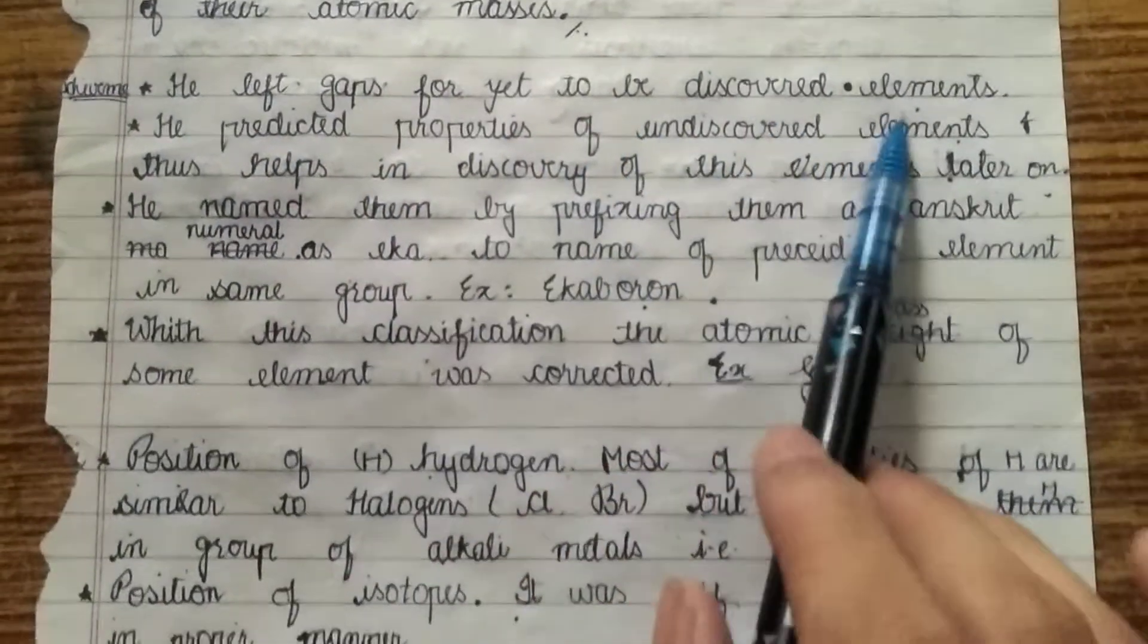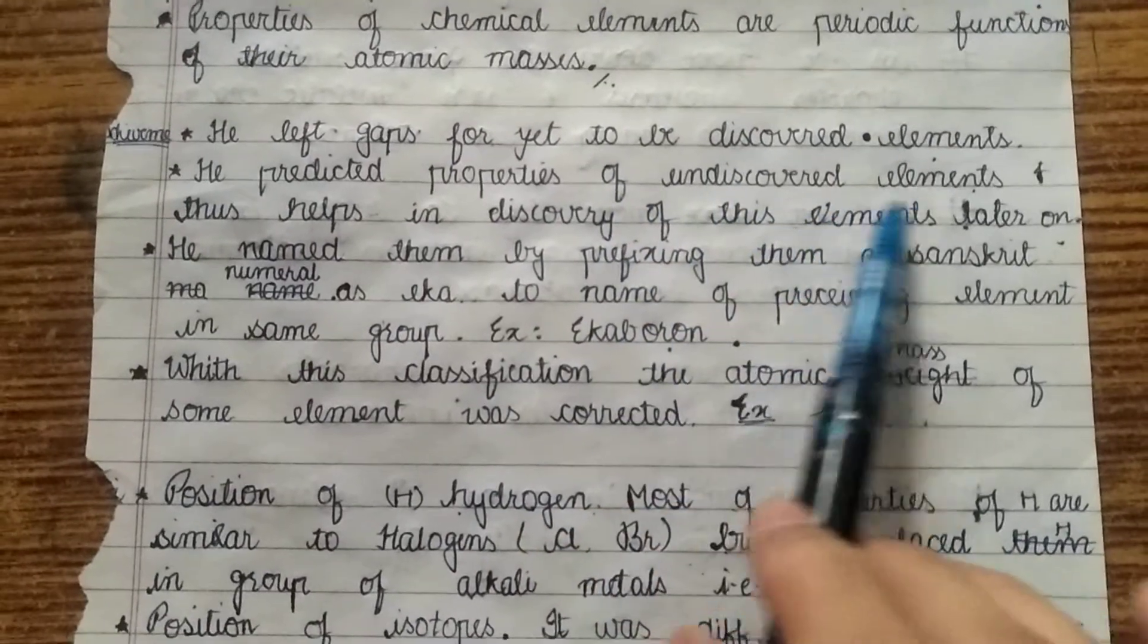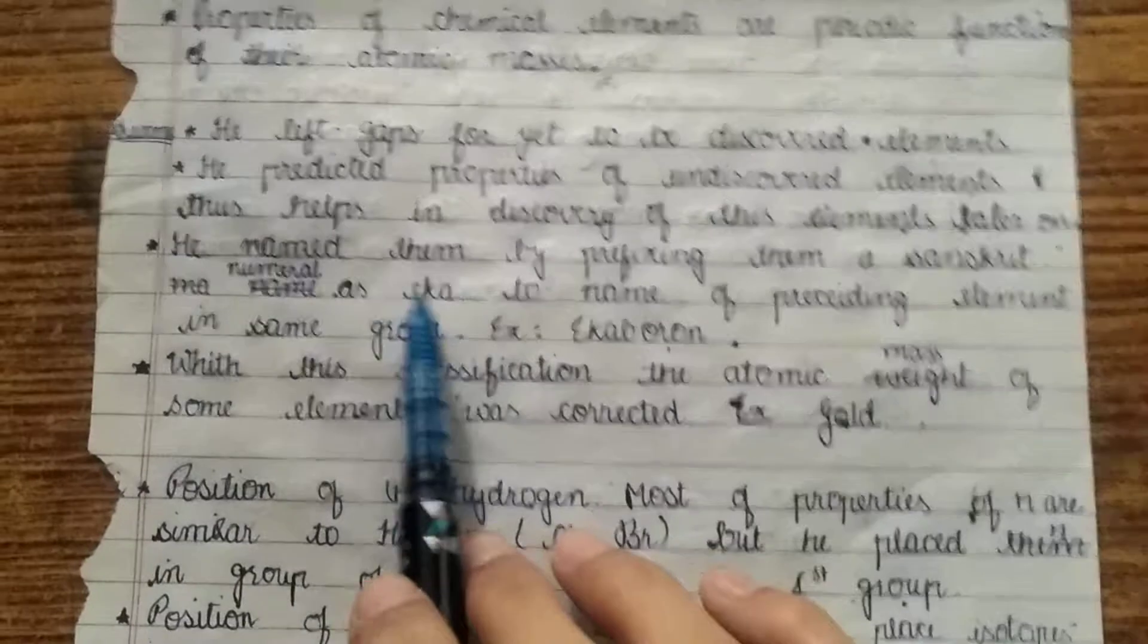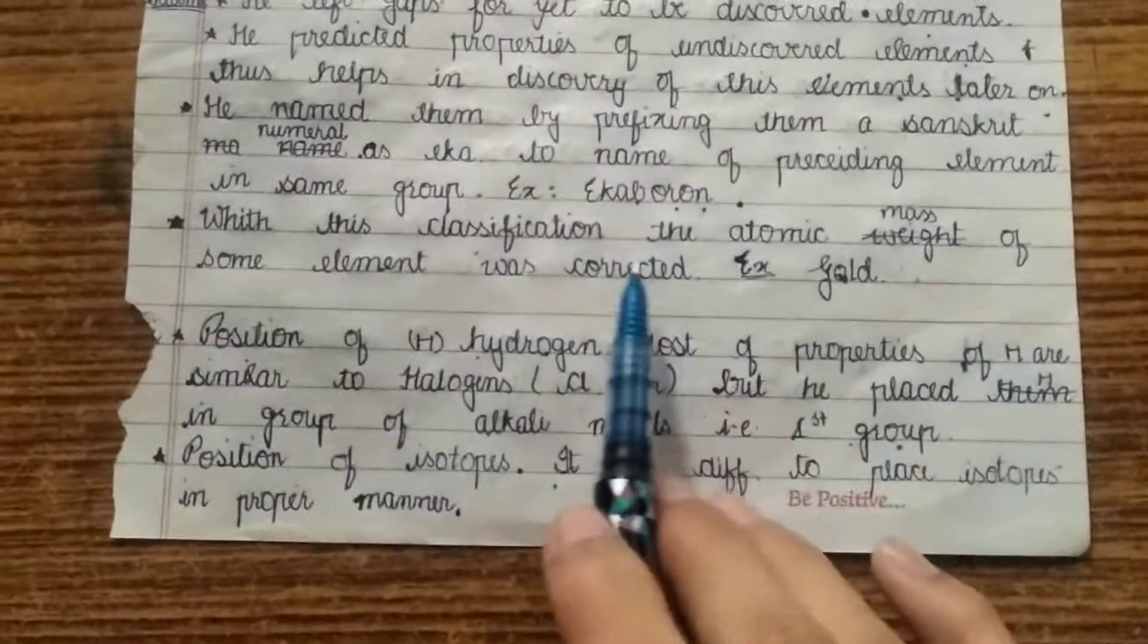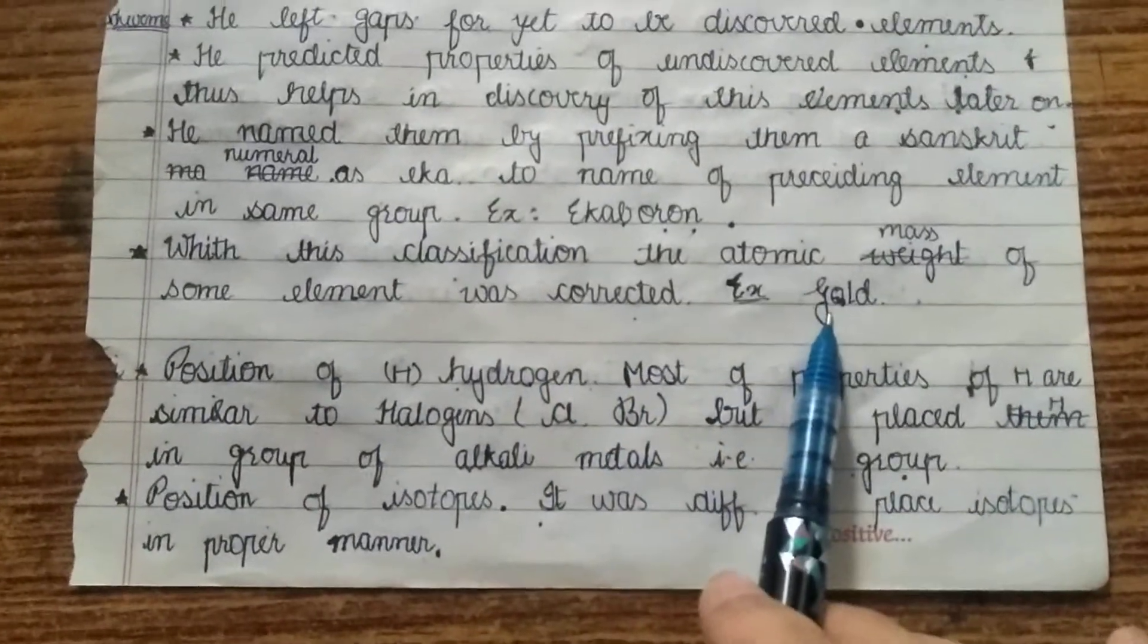Now his achievements. He left some gaps for yet to be discovered elements. He also predicted the properties of the undiscovered elements and this helped in the discovery of these elements later on. He named them by prefixing a Sanskrit numeral. Example is Eka-boron. With his classification, the atomic mass of some elements was corrected, for example gold.